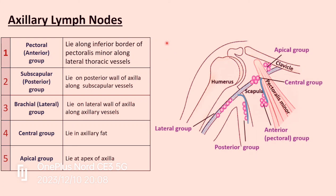There are five groups of axillary lymph nodes. First is the pectoral or anterior group, located along the inferior border of pectoralis minor muscle, associated with the lateral thoracic vein. Second is the posterior or subscapular group, in the posterior wall of the axilla along the subscapular vessels. Third is the brachial or lateral group, in the lateral wall of the axilla associated with the axillary vein. Fourth is the central group, located in the center — the base of the axilla in the axillary fat. Fifth is the apical group, present at the apex of the axilla.